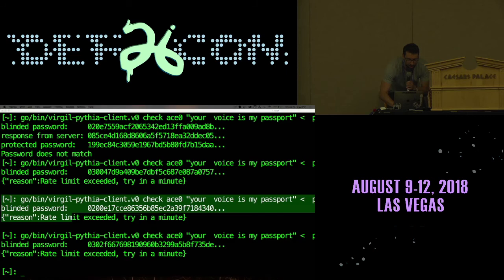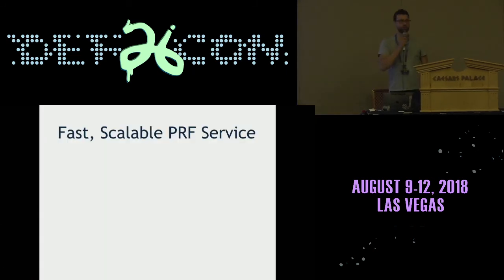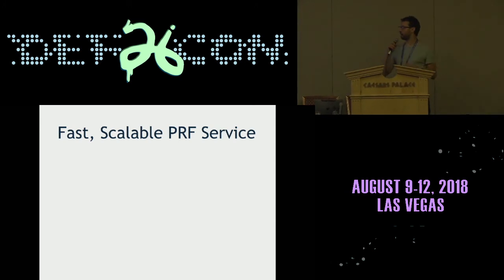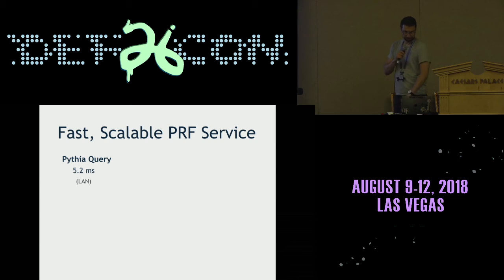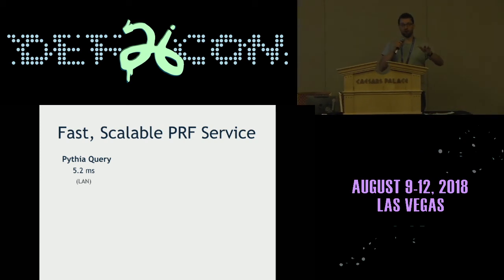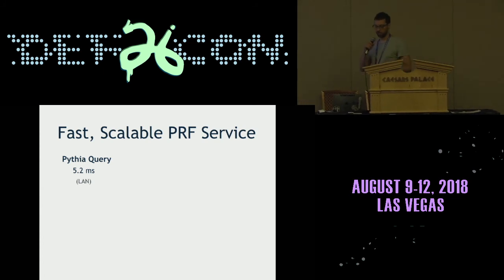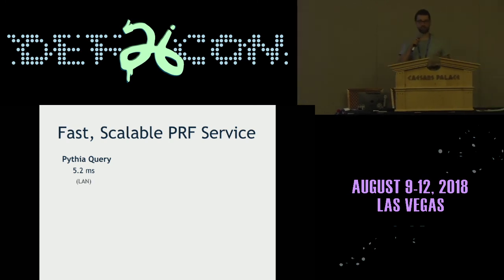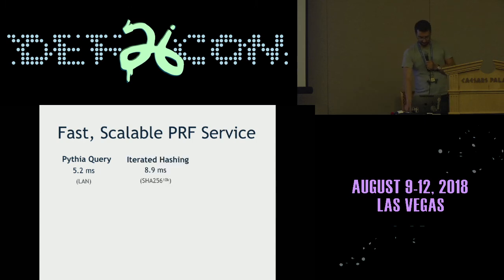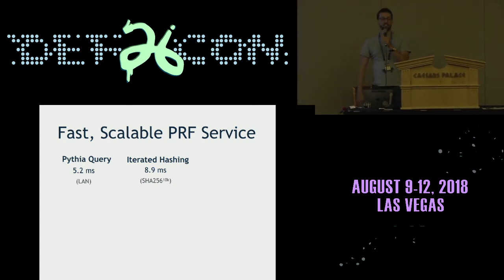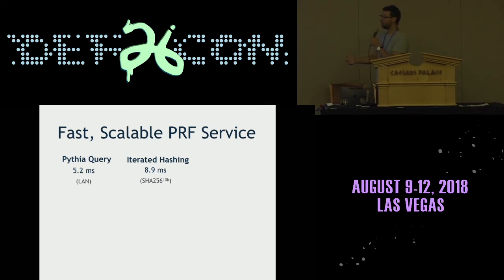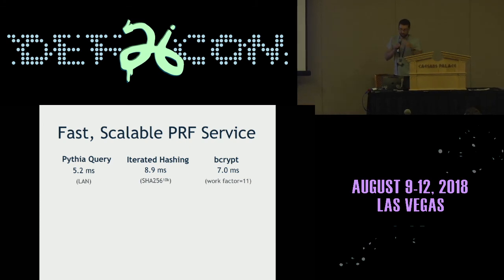That's the totality of the demo. Let's go back and talk a little more about performance. If both the Pythia server and the web server are on the same local area network — important because then network latency doesn't factor into these numbers — one can execute a Pythia query in about five milliseconds. If you're following the latest guidelines from NIST, which is to use SHA-256 hashing with at least 10,000 iterations on the same hardware, that takes nine milliseconds. Using bcrypt with a work factor of 11, which is a popular setting, takes about seven milliseconds. So Pythia today is already faster than the current best practices.